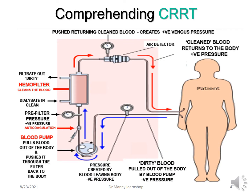To comprehend what continuous renal replacement therapy is: you've got a patient with access in the right arm, so blood is taken out — the dirty blood is pulled out of the body by the blood pump via negative pressure. The blood pump pulls the blood out and pushes it through the filter, then returns it back to the body. There can be anticoagulation, as you'll see in other Learn Shops, but it doesn't have to — it depends on the position order and whether there's a contraindication or requirement for anticoagulation.